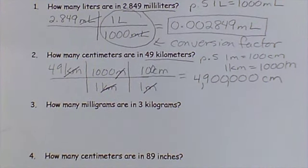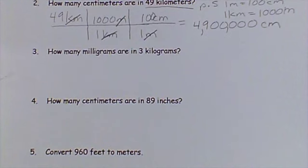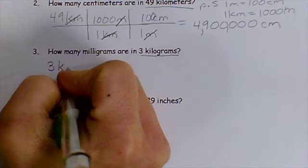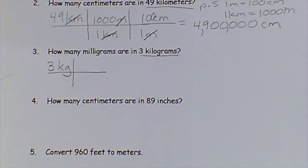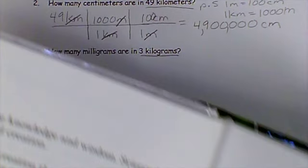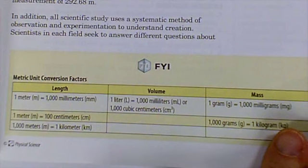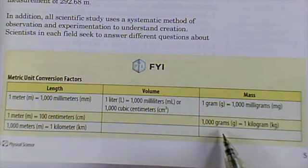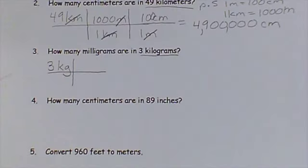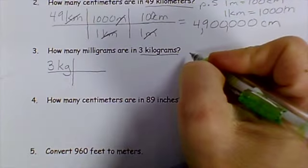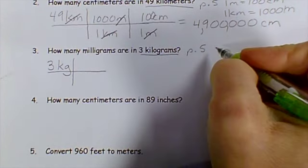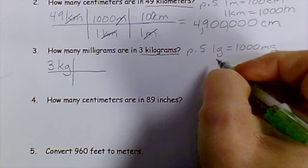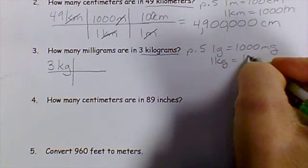Okay, let's go to the next one. How many milligrams are in three kilograms? So I have three kilograms here. I write that down. And then I go to page five. And page five over here says that one gram is 1000 milligrams, and 1000 grams is one kilogram. So I have to use both of those facts. So one gram is 1000 milligrams, and one kilogram is 1000 grams.